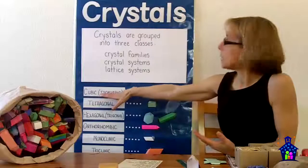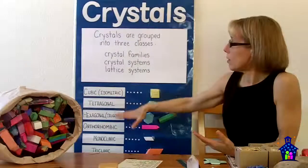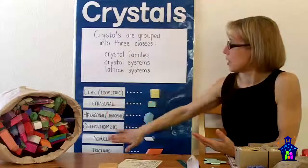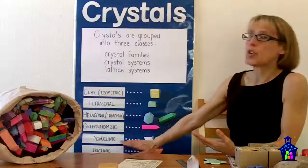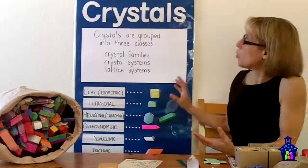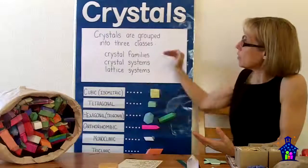So what I've got listed here are the crystal families. So the cubic, also called isometric, trigonal, hexagonal, orthorhombic, monoclinic, and triclinic, and you can see here that I have samples of each one of those. Okay, now those are the six crystal families.